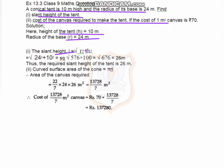So l = √(24² + 10²). 24 squared is 576 and 10 squared is 100. Adding both: 576 + 100 = 676. Therefore l = √676 = 26 meters. The required slant height of the tent is 26 meters. The curved surface area of the cone equals π r l.